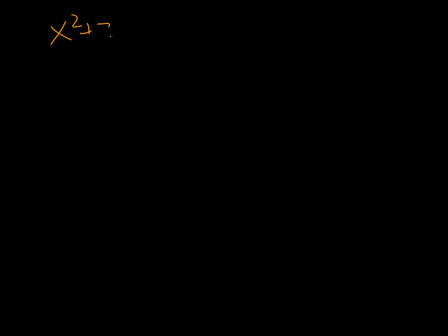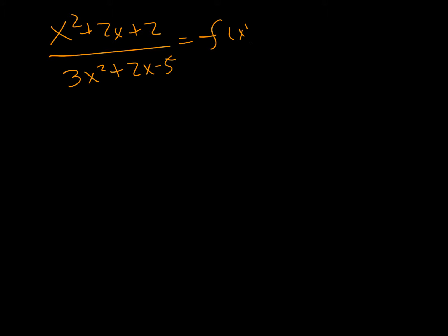Hey, Math Kids. Today we're going to talk about rational functions. All a rational function is, is if we have a function over a function. So we could have two quadratics on top of each other, and if we write it like that, it's just called a rational function.